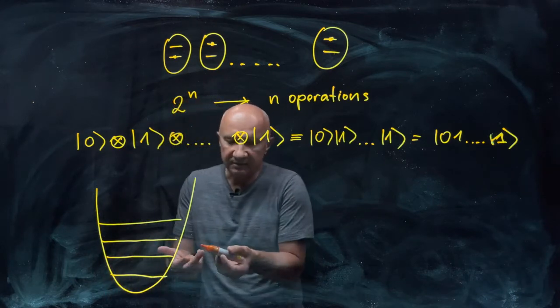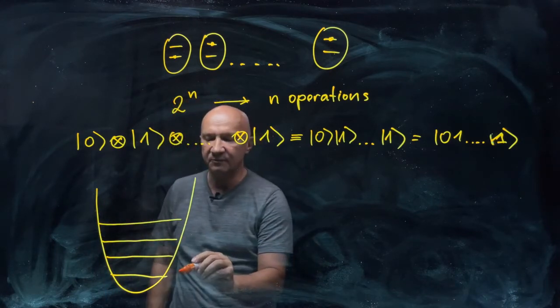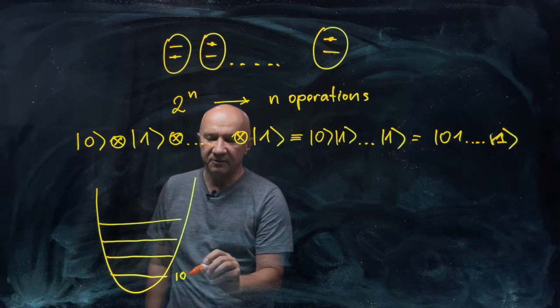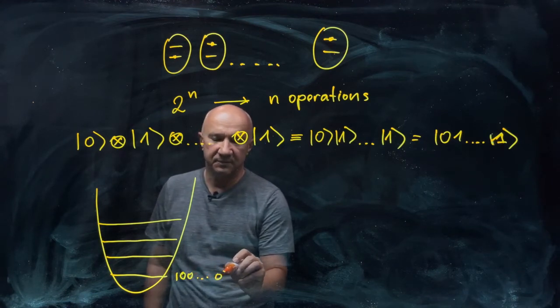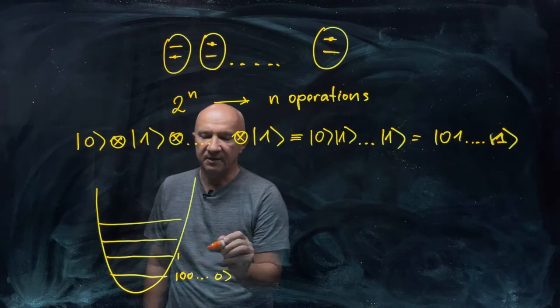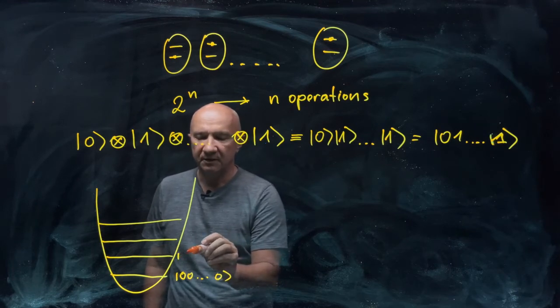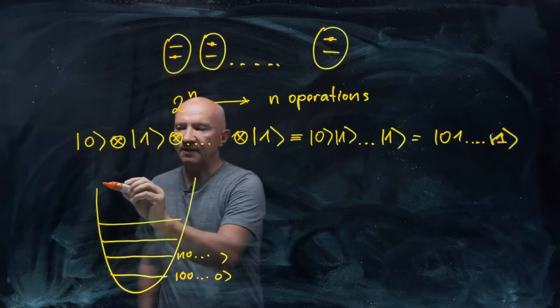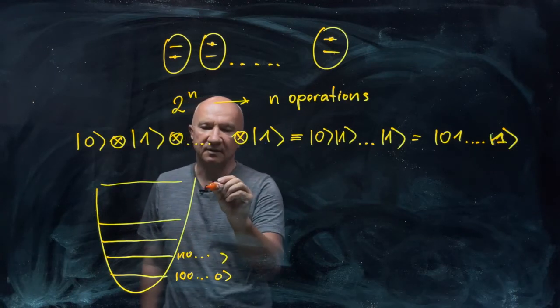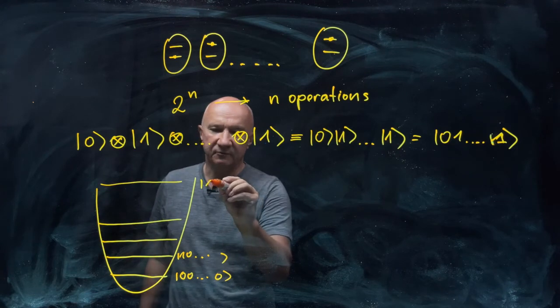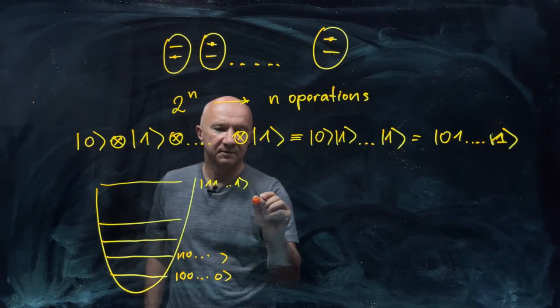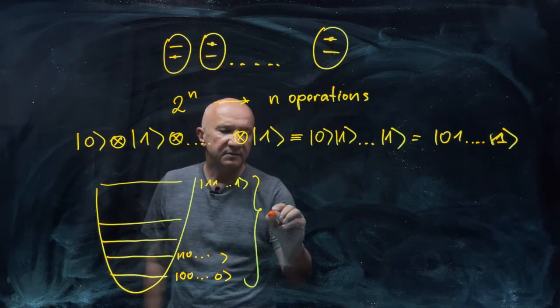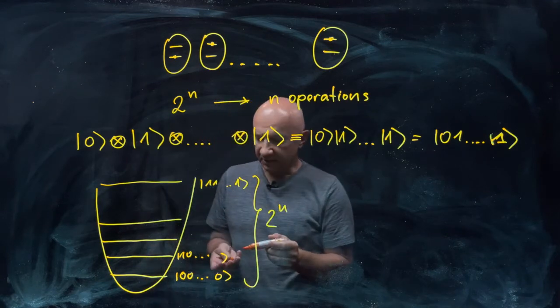And you can say, well, nothing prevents me from labeling this one as 0, 0, 0. Say this one could be 1, 0, and so on and so forth. And then you have one at the top of this energy ladder, which is 1, 1, all ones. So you have 2 to the n different states that you picked up.